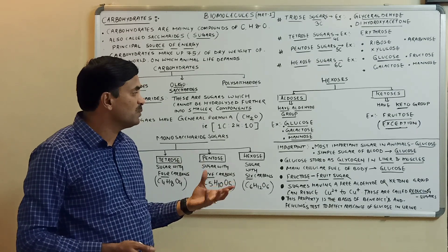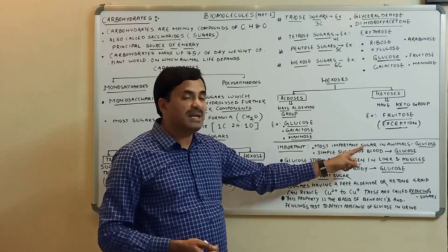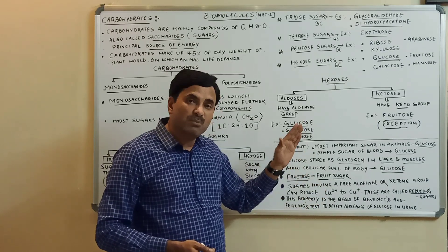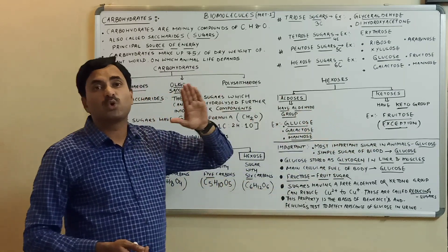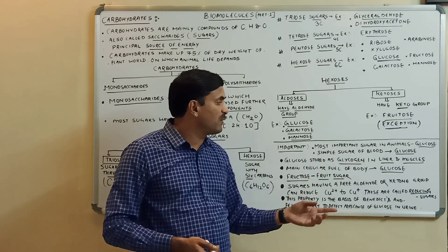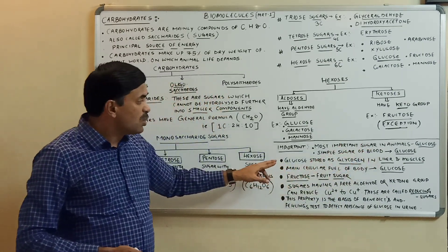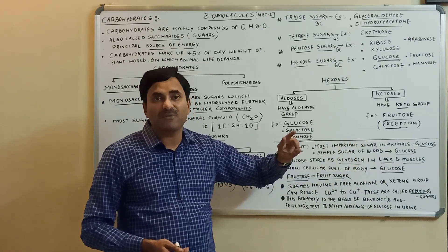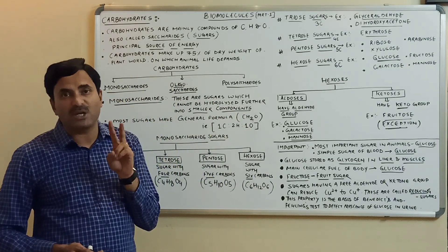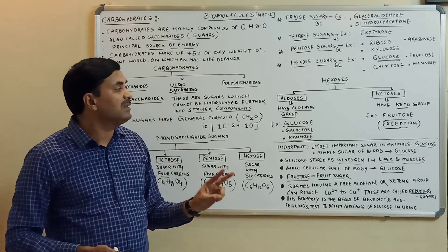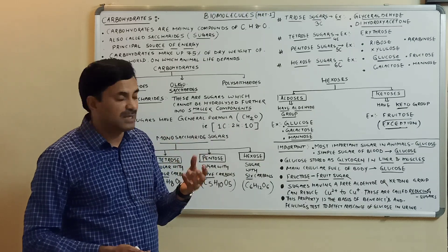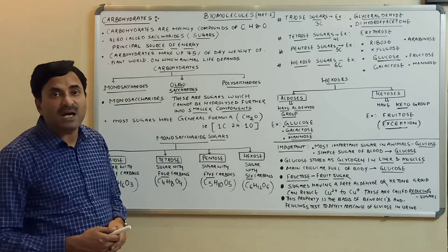Some important points about monosaccharide sugars: the most important sugar in animals is glucose. Glucose is the simple sugar found in blood. Glucose is stored as glycogen in the liver and muscles — the additional glucose in the animal body is converted to glycogen, which is the stored food material of animals. Glucose is the main cellular fuel of the body.